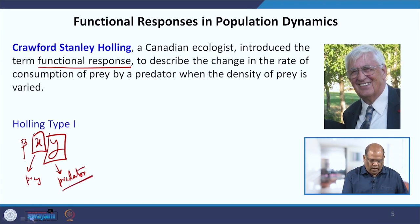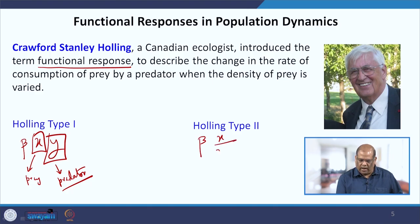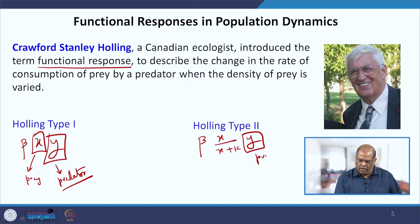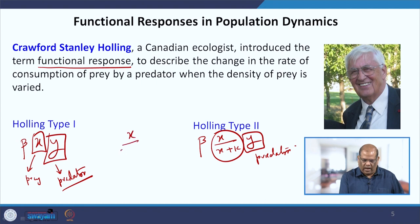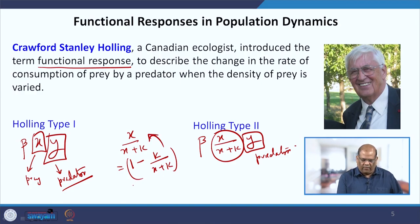In Holling Type 2, the function will be of the form beta·x divided by (x + k), times y. We generally use this kind of function when the predator does not have access to the whole prey — it has access only to a fraction of the prey. For example, x/(x + k) can be written as 1 minus k/(x + k), so it represents a fraction of the prey accessible to the predator.